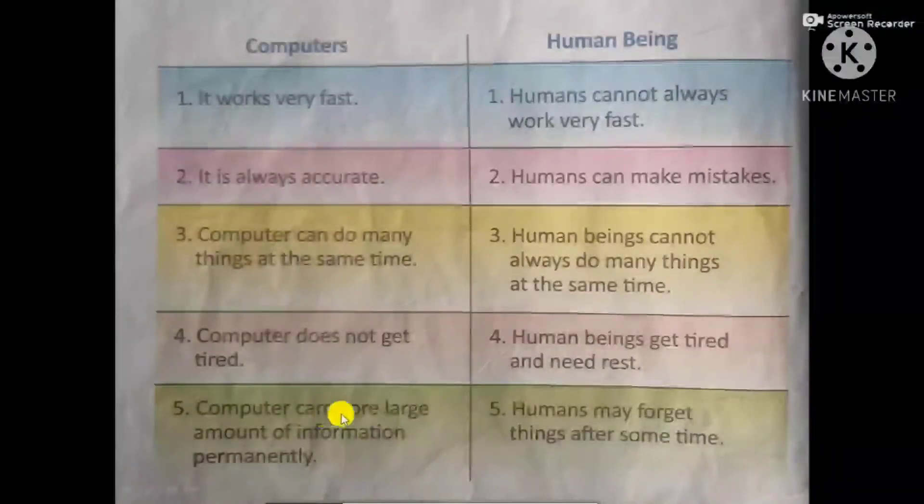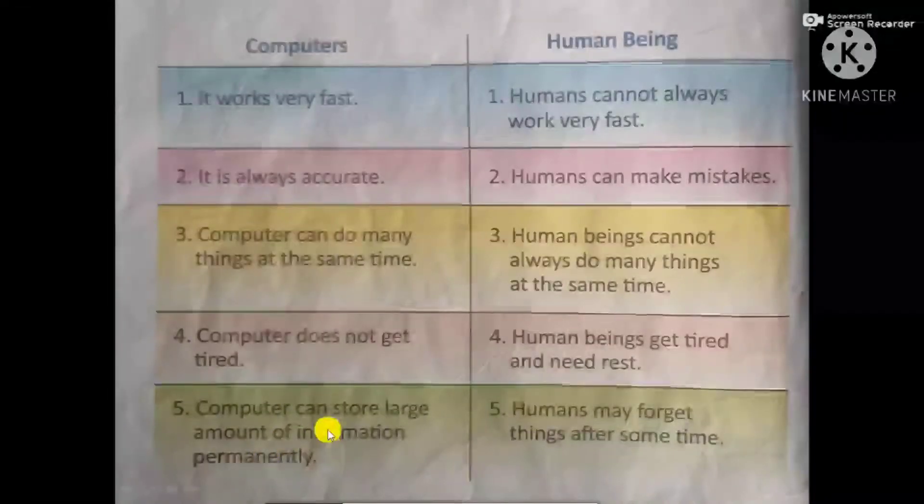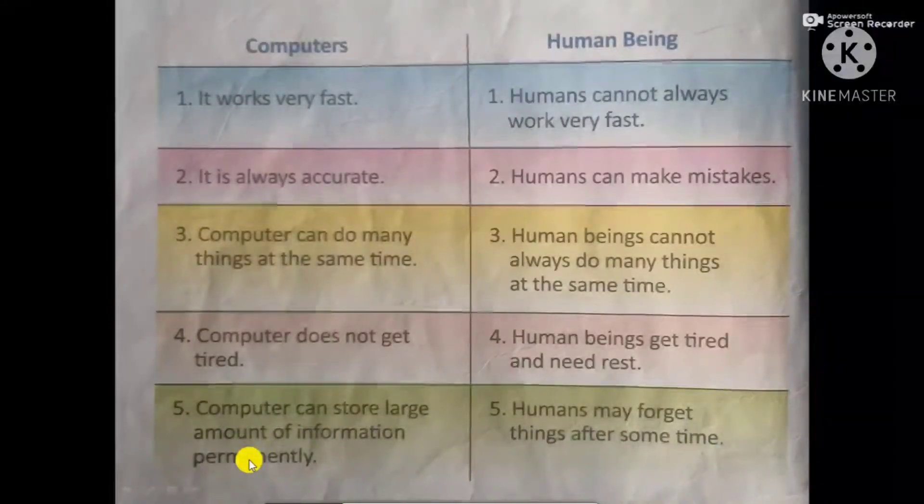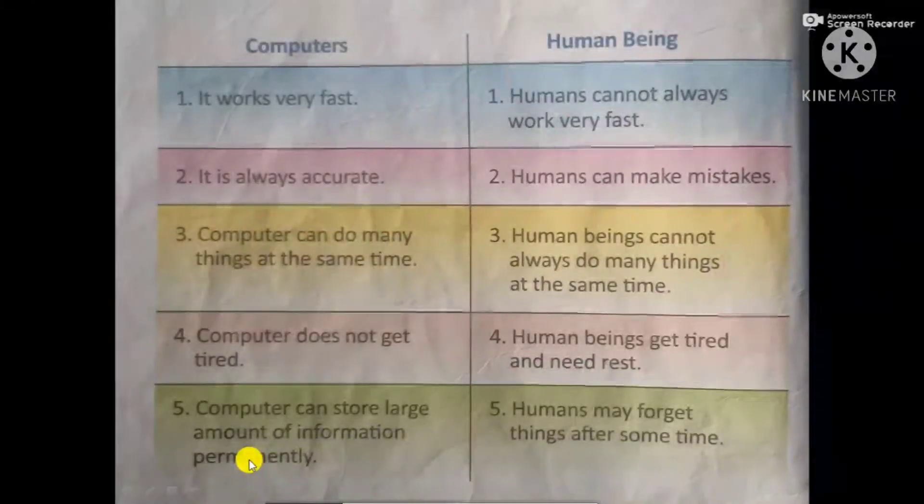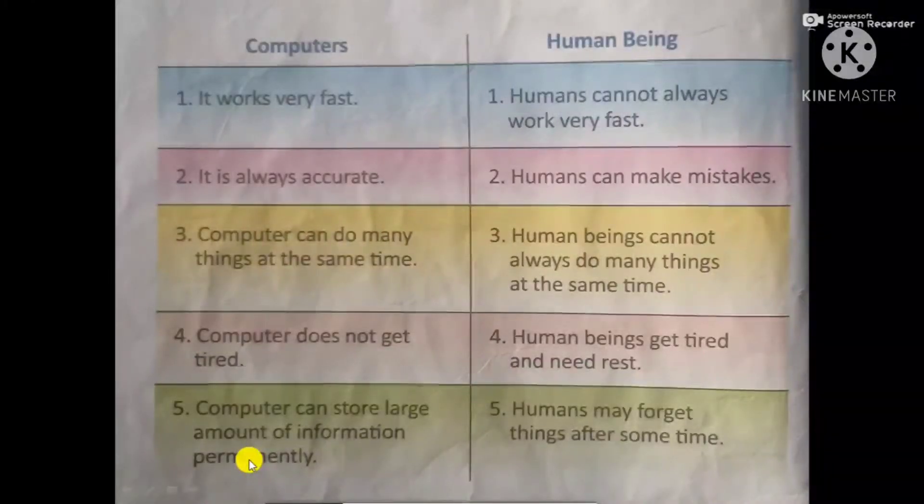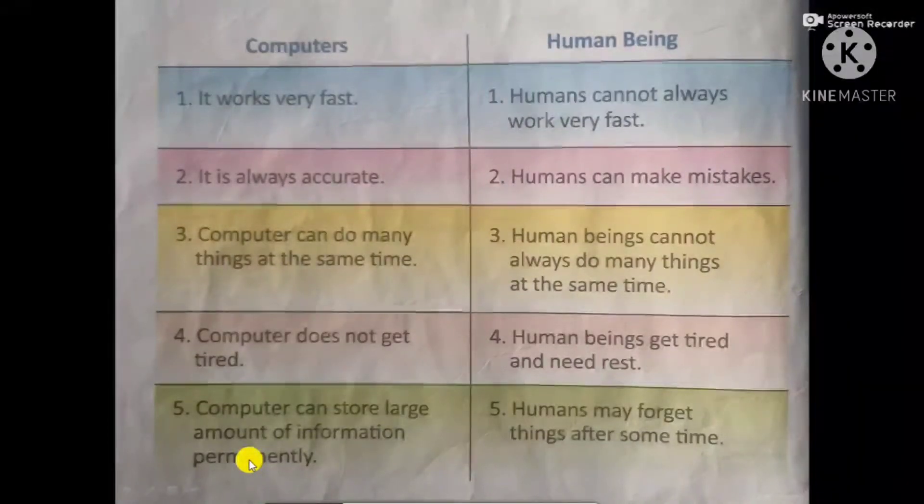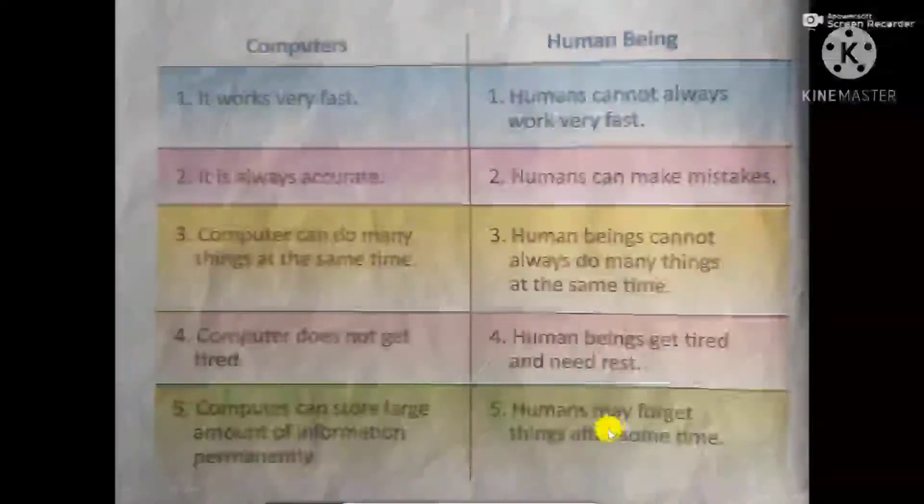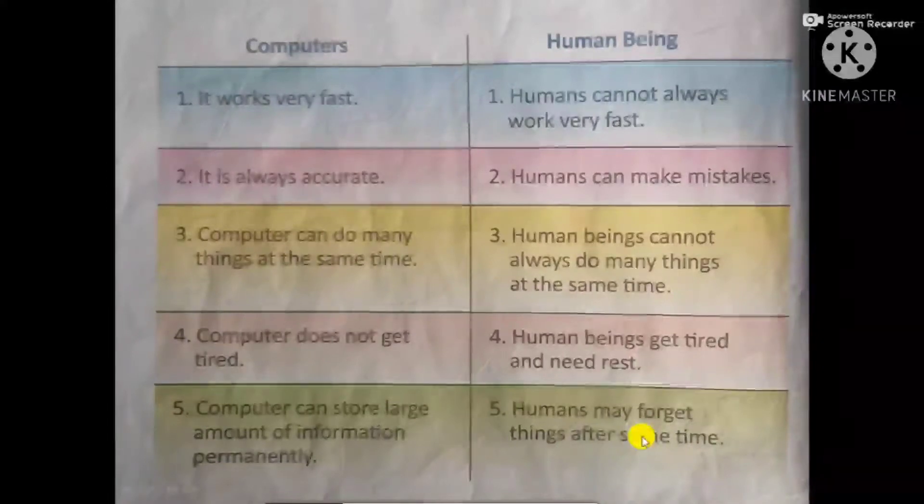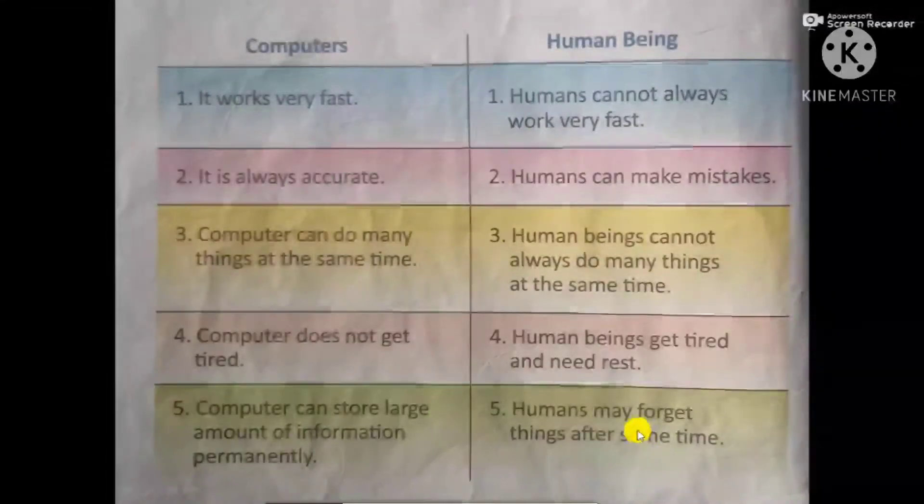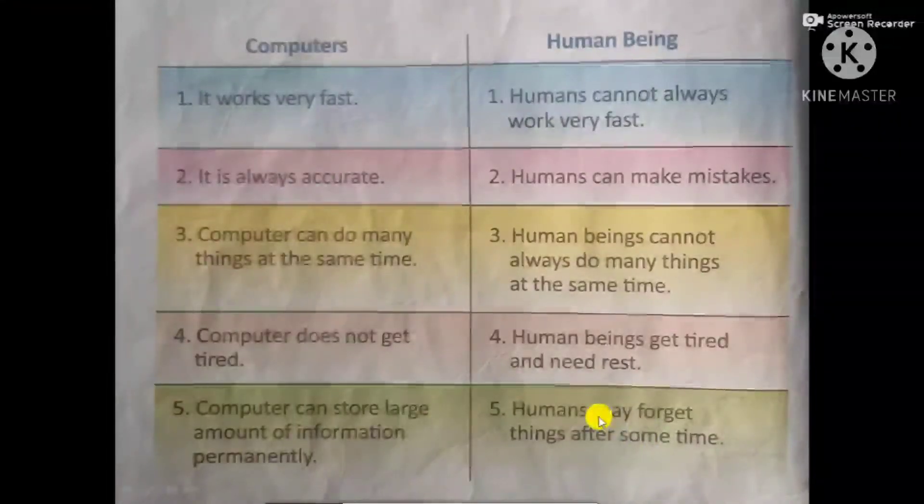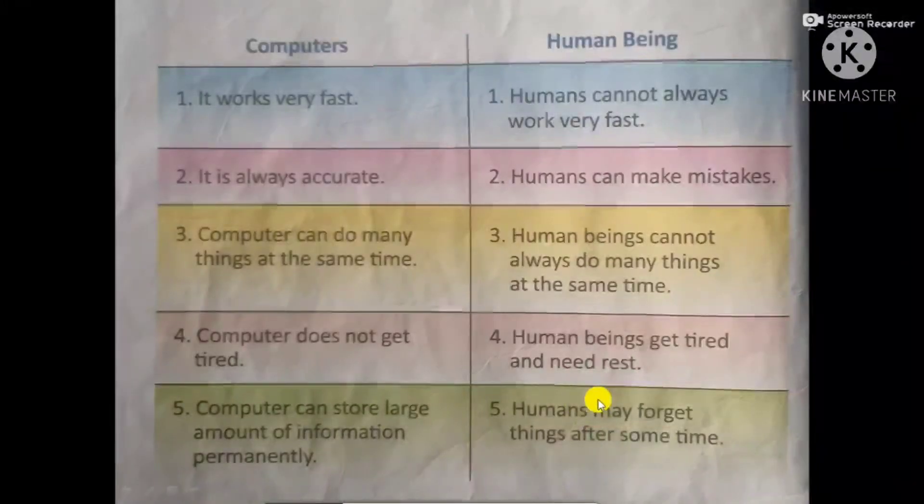Fifth, computer can store large amount of information permanently. Computer has huge storage devices. It can store a large amount of information. But humans may forget things after some time. It is natural that we can forget things after some time.